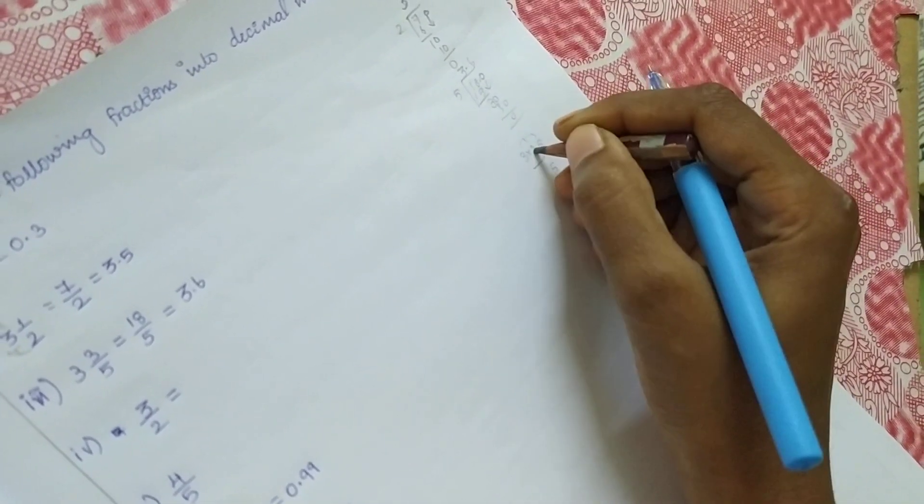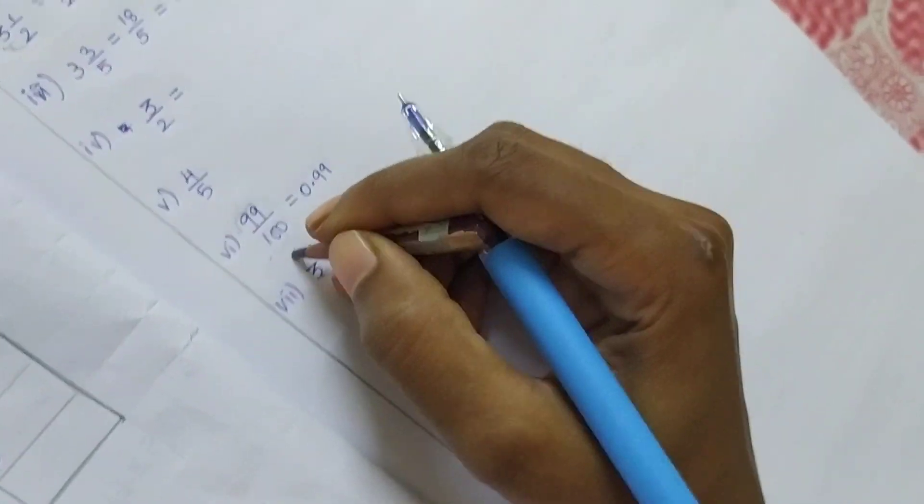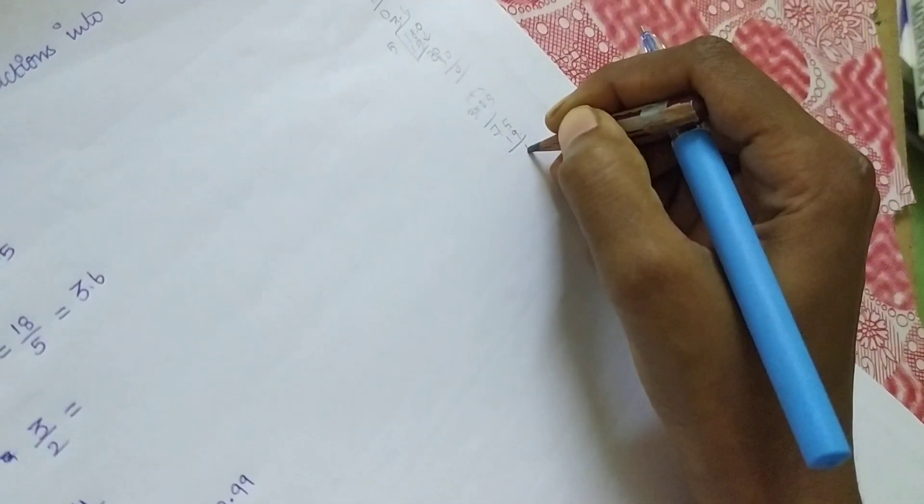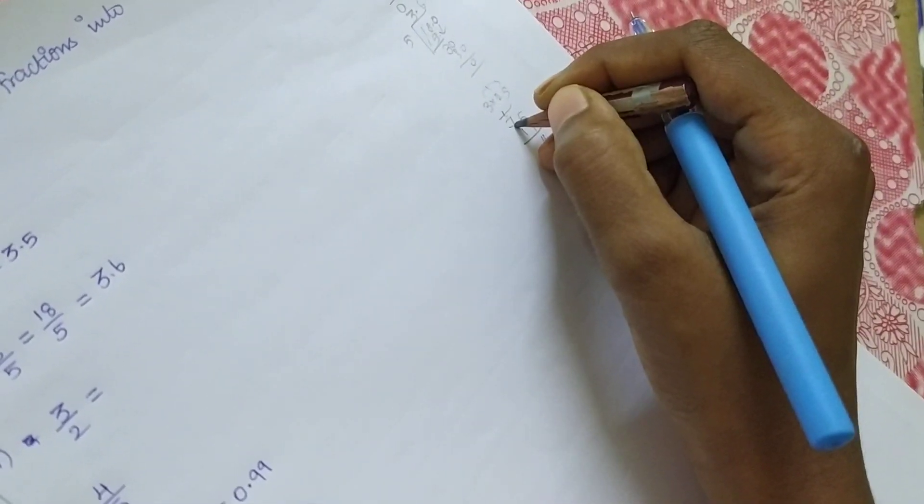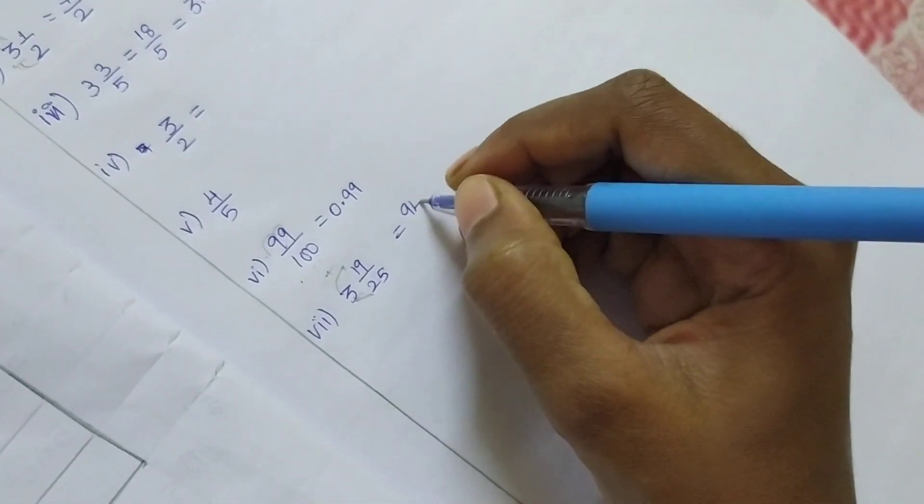Add these two numbers: 40, balance 1. 7 + 1 = 8, 8 + 1 = 9. So we're getting 94/25.